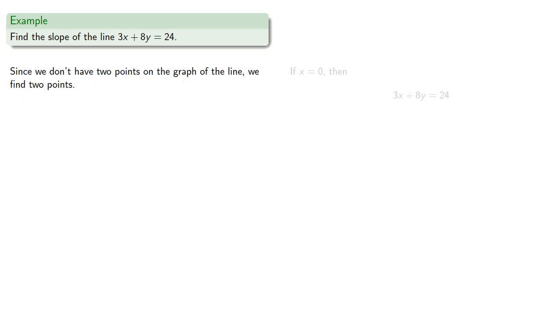So if x equals 0, then equals means replaceable, and so our equation becomes, and we can solve for y to find, so y equals 3, and so 0, 3 is on the graph.